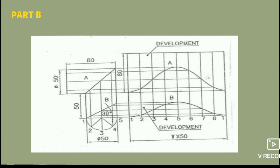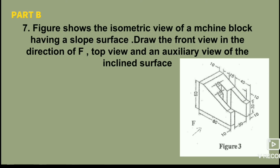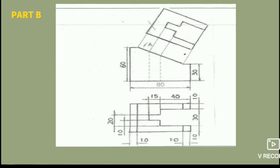The last question in Part B comes from the auxiliary view. The figure shows the isometric view of a machine block having a sloped surface. Draw the front view in the direction of F, the top view, and the auxiliary view. There are three views: front view, top view, and auxiliary view. In the inclined surface, we have the auxiliary view. That will be easy to handle.